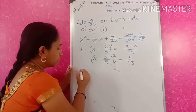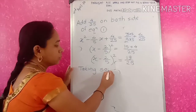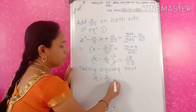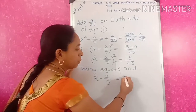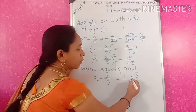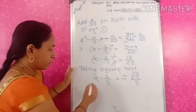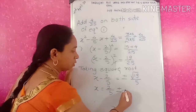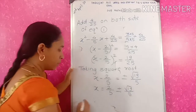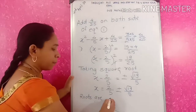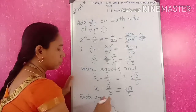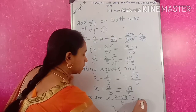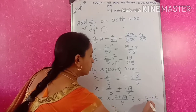Taking square root on both sides, we get x minus 2/5 on the LHS. On the RHS, the square root of 19/25 is plus or minus root 19 over 5. Transferring minus 2/5 to the other side gives x equals 2/5 plus or minus root 19 over 5. Therefore the roots are x = (2 + root 19)/5 and x = (2 minus root 19)/5.